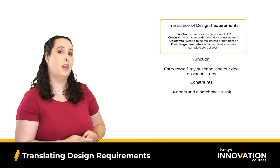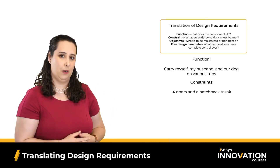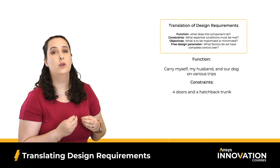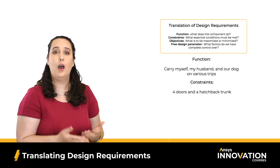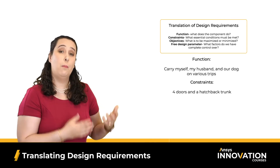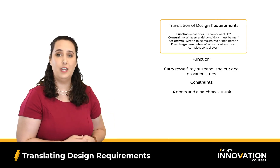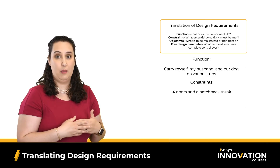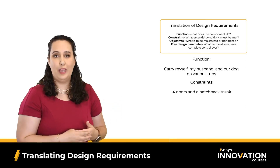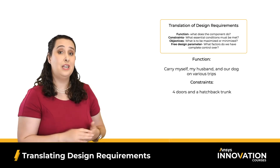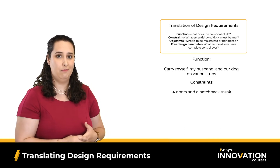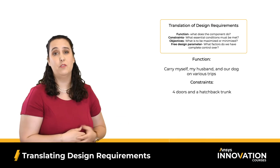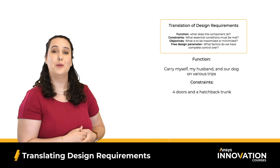Our constraints: must have four doors and that hatchback trunk. Why are these constraints? Well, if the car doesn't have them, I won't buy it. When we were defining constraints, we said that they were our go-no-go criteria. If the material wasn't able to perform in a certain way or didn't have specific properties, we needed to remove it from consideration. So any car that didn't have four doors or a hatchback trunk was removed from the pool of cars I was willing to consider.